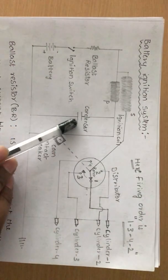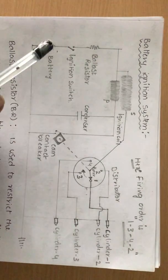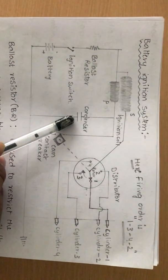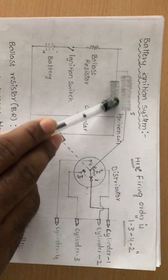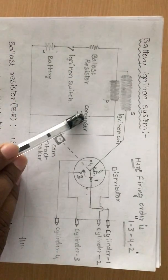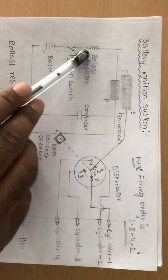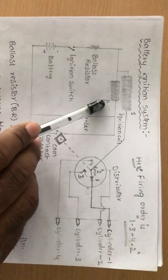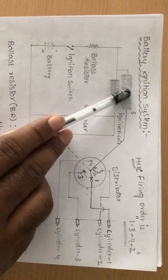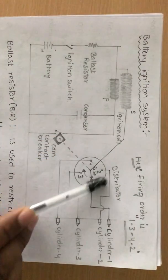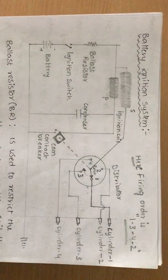These two currents charge the condenser to a voltage much higher than the battery voltage. When the condenser voltage exceeds the battery voltage, current flows in the reverse direction from the condenser to the battery. This reverse current induces a reverse magnetic field, which induces a high voltage in the secondary coil, and this high voltage is sent to the distributor, which supplies it to the corresponding cylinder.